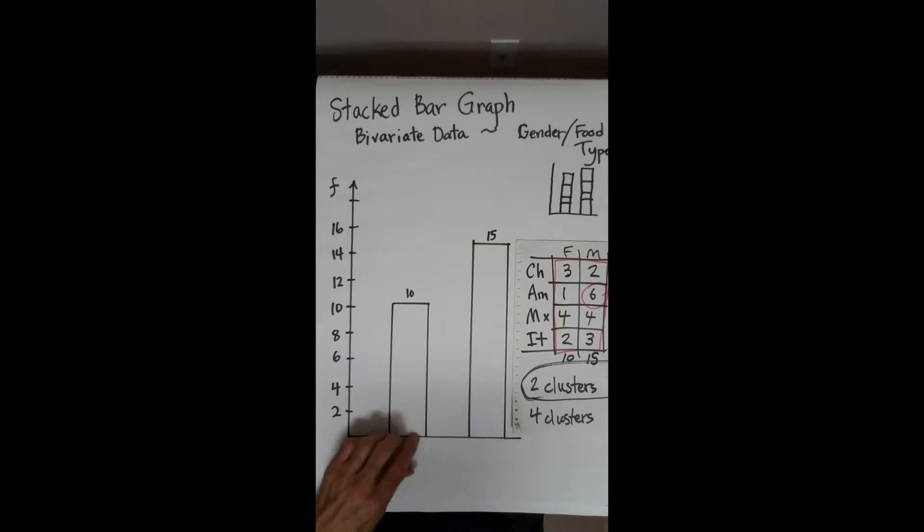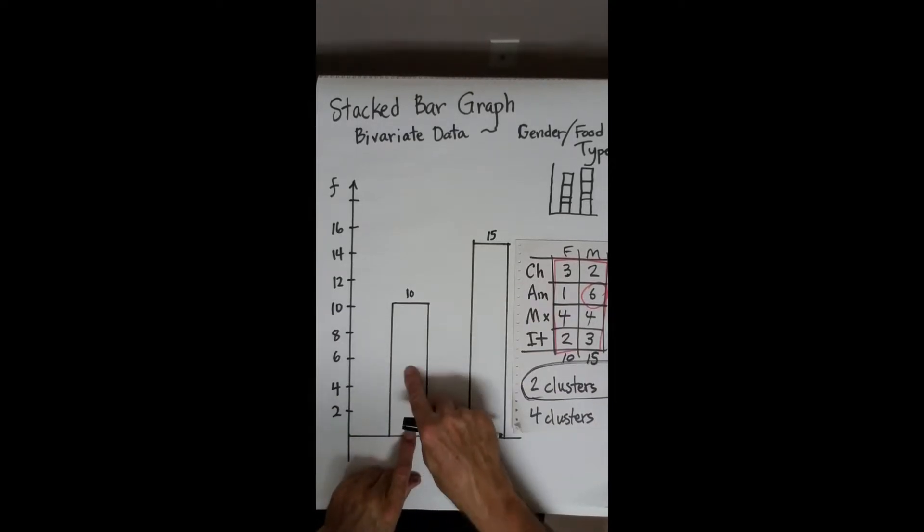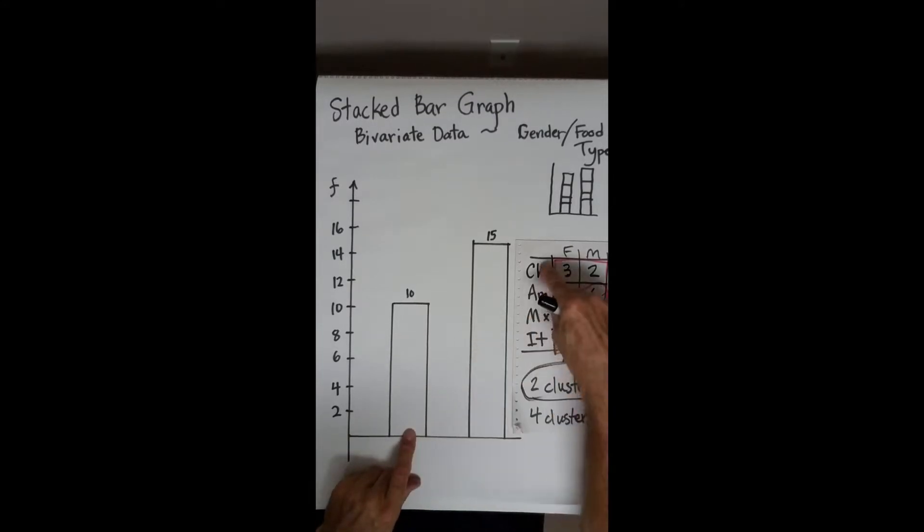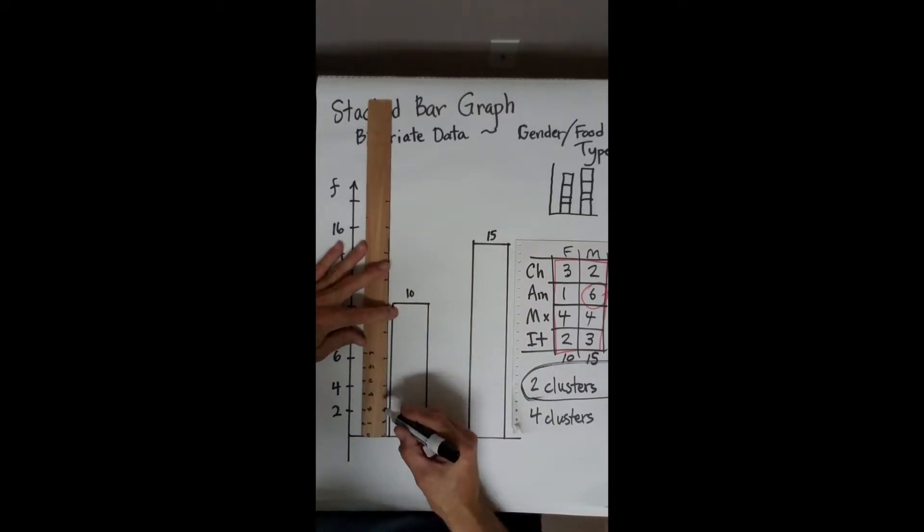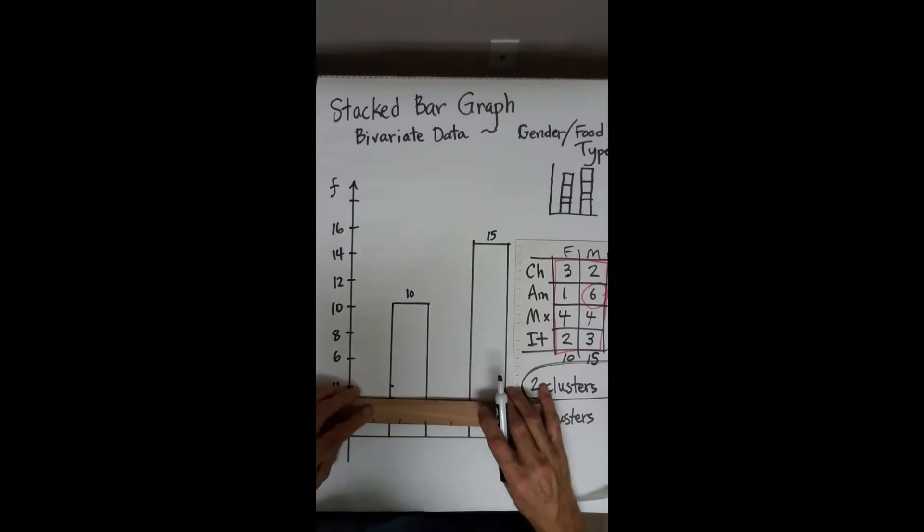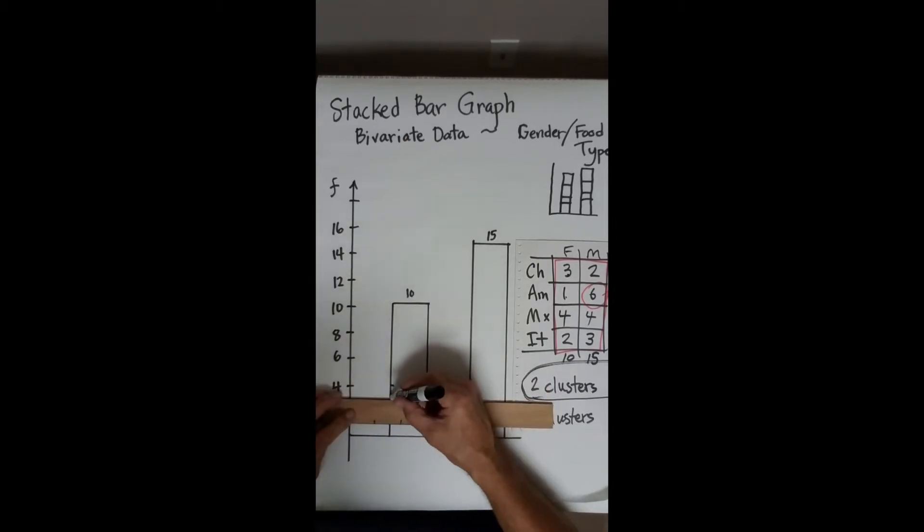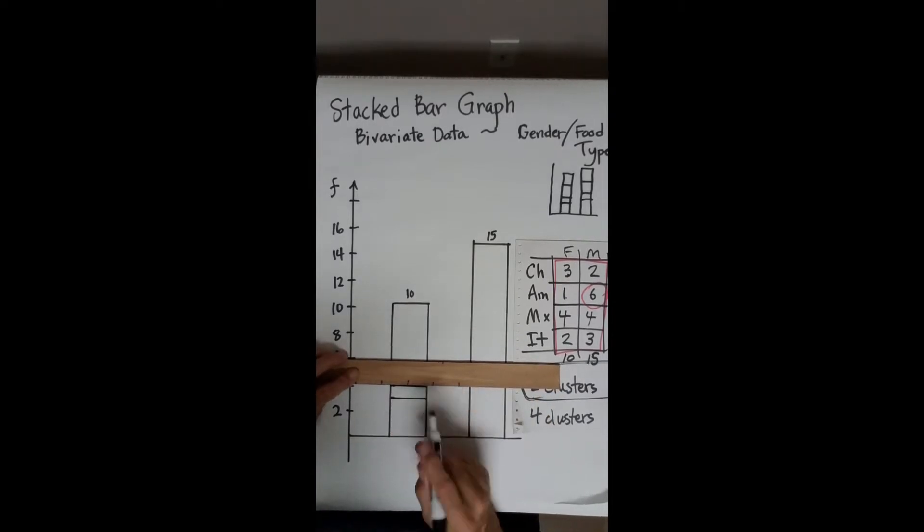Now we need to chop it into pieces. We're going to put Chinese at the bottom, then American, then Mexican, and Italian. And generally, the order here gets reversed as you go up. So, 3 ladies enjoyed Chinese. So I go 1, 2, 3. And then 3 plus 1 more. So I go 1 more. So I would go up to 4 to include that next lady. So here's the first 3 ladies cared for Chinese. Then 1 lady cared for American. That's 3 and 1.